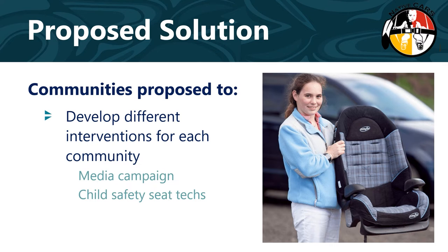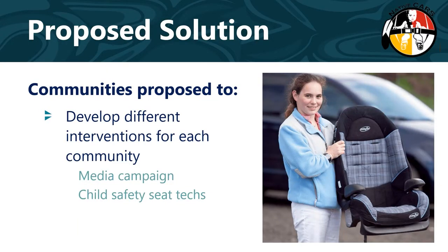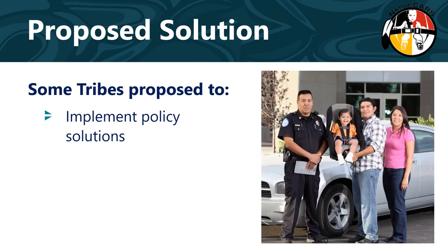After sharing the data story with community members and leadership, communities proposed to develop tailored interventions — different for each community. All involved community-specific media campaigns with messages based on local data, created and delivered by local people. All tribes planned to train and employ child passenger safety technicians — individuals who would reach out to community members and help them select, install, and use child safety seats that fit each child and vehicle. Tribes also learned from each other about what was already working. Native CARS tribes with a child safety seat law had a higher proportion of properly restrained kids — 70% — compared to those with no law — 36%.